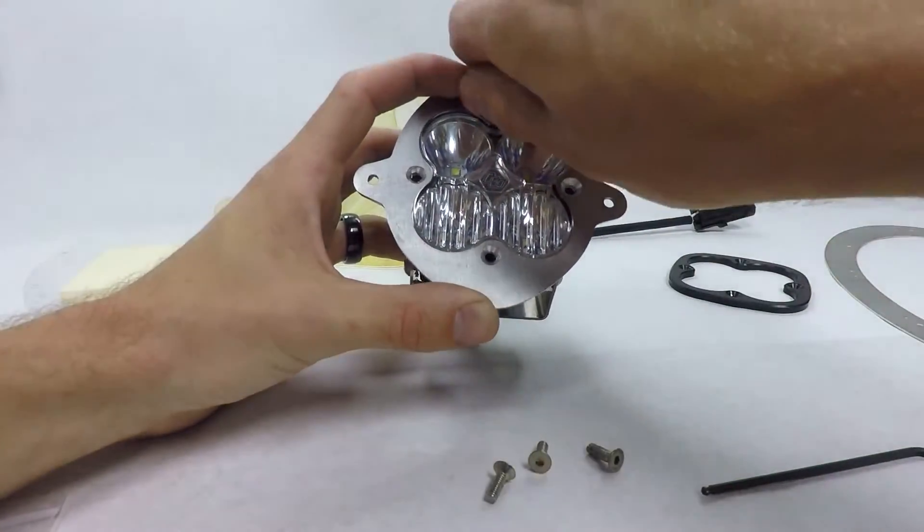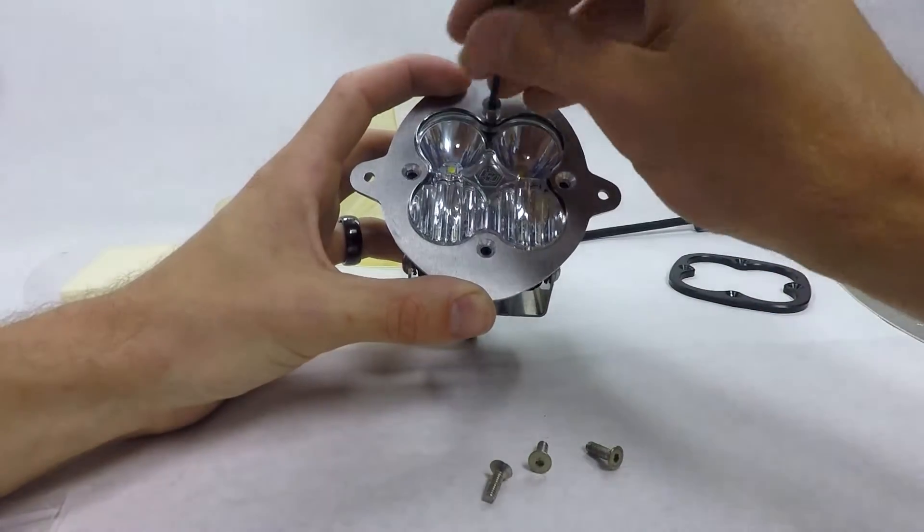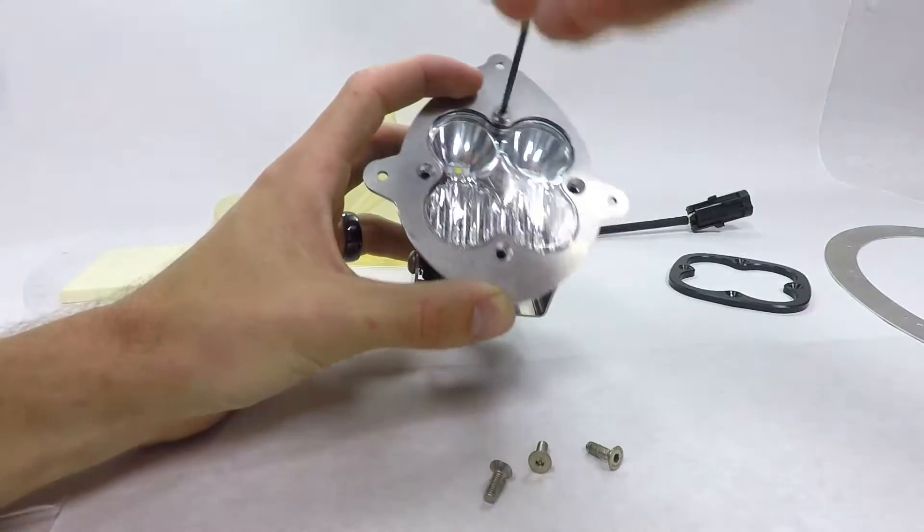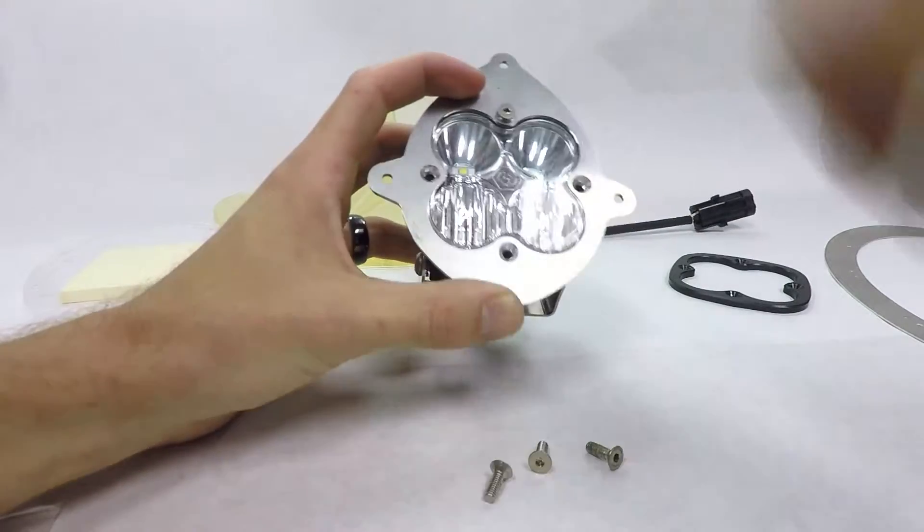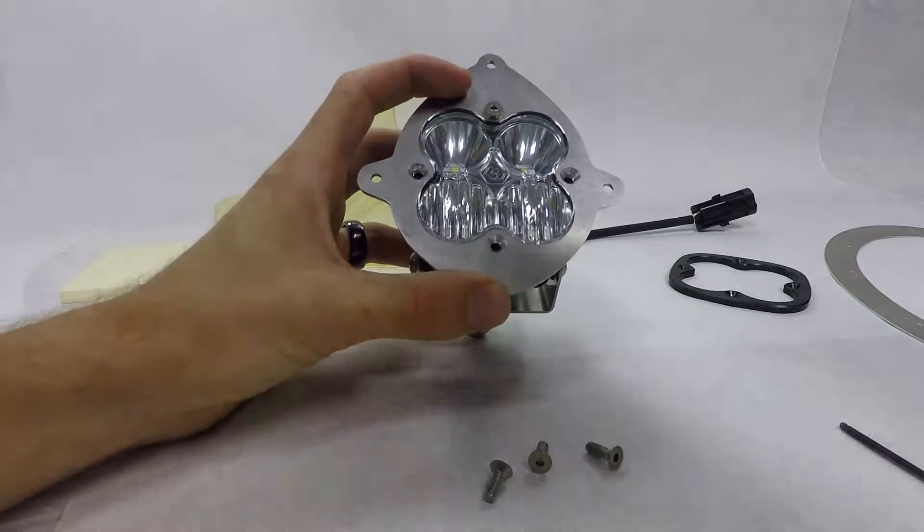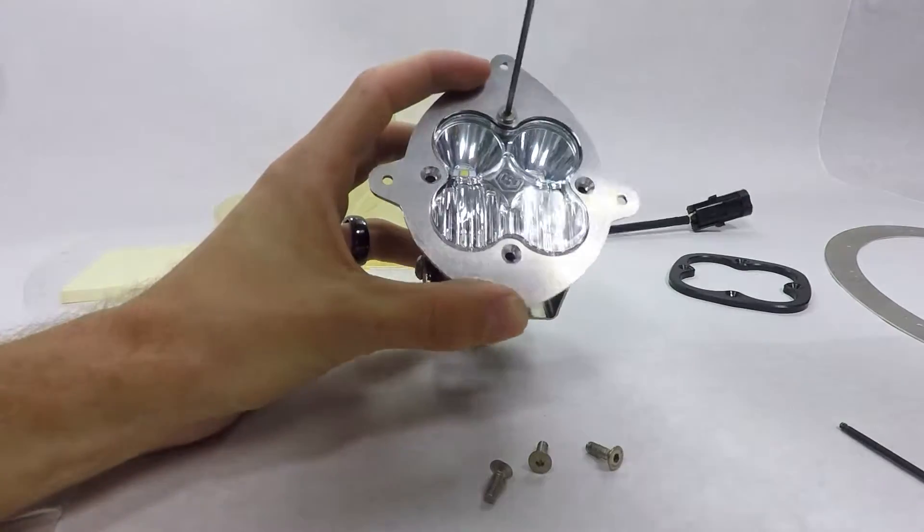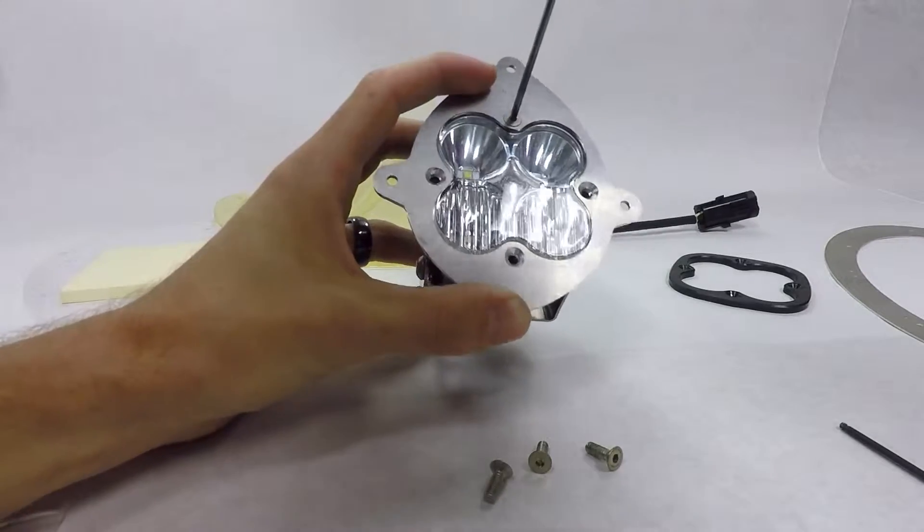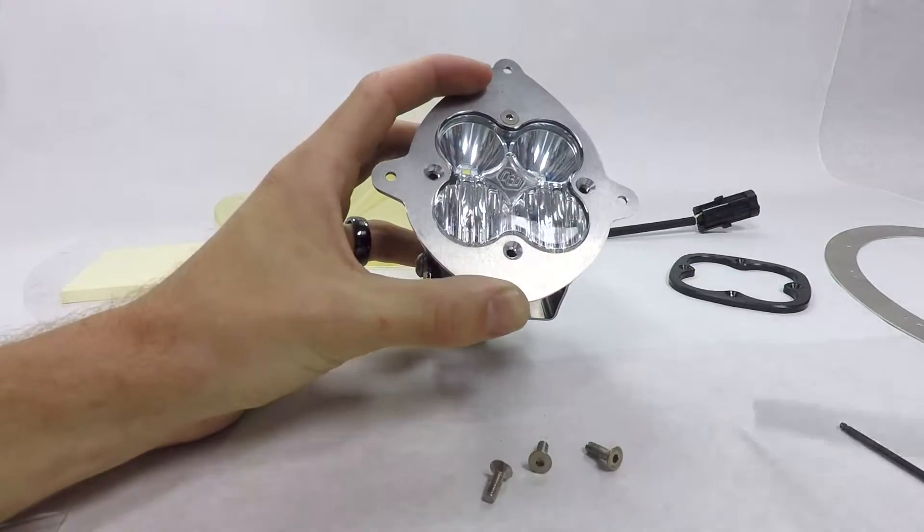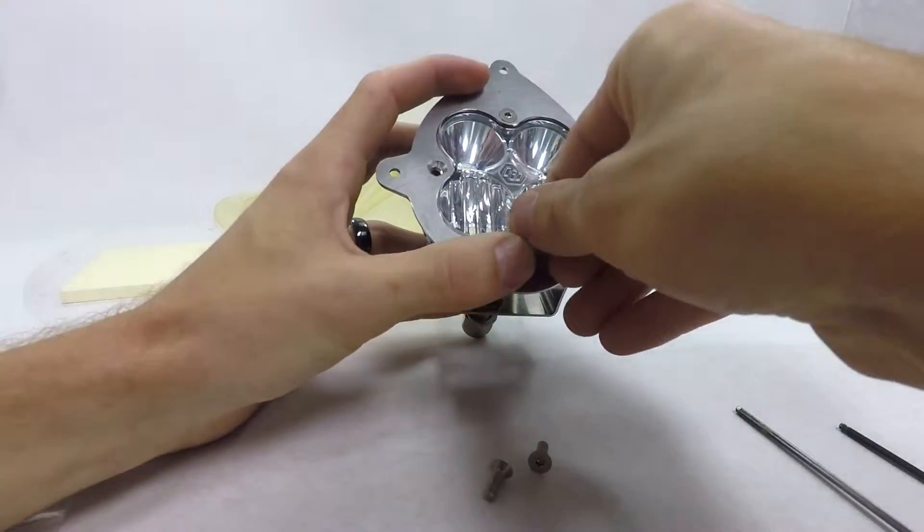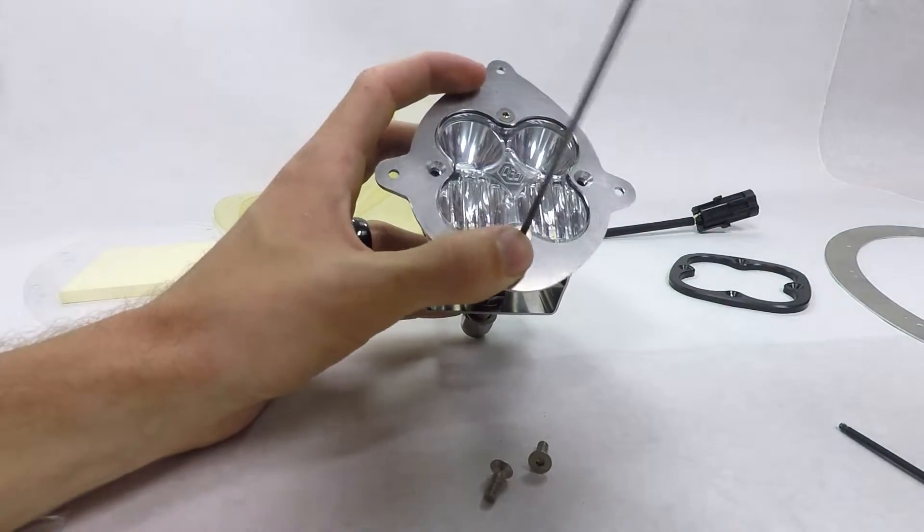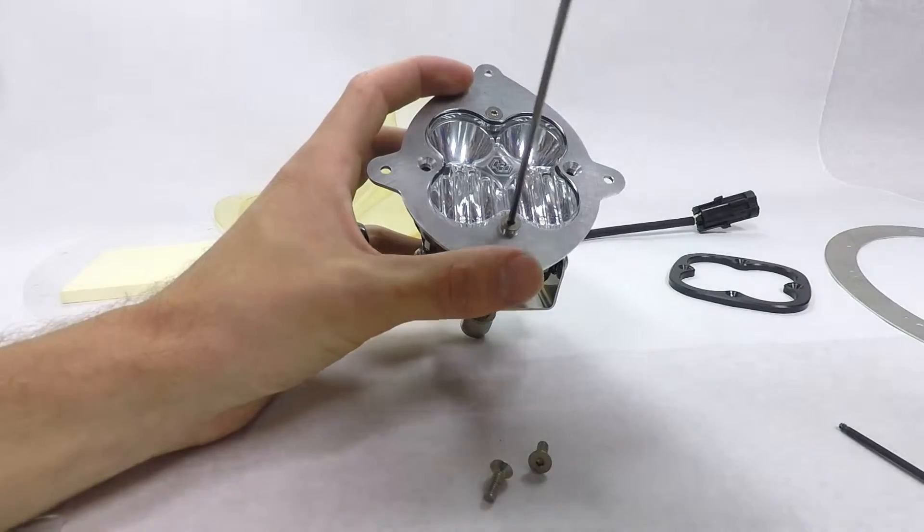Take these same screws that you got with your light, put them all back in there. Use a T-handle here so we can go a little quicker. Be real careful when you're putting these screws in. You don't want your driver to pop off and crack or scratch your lens on your LED light.